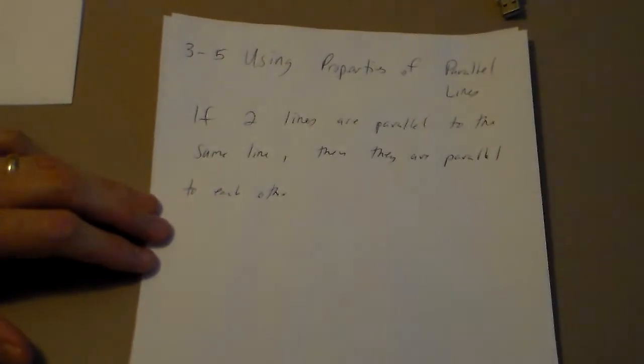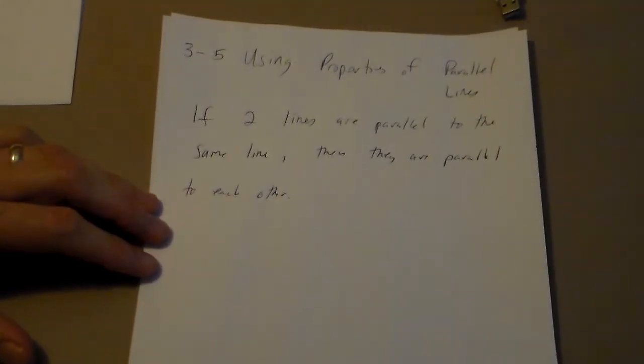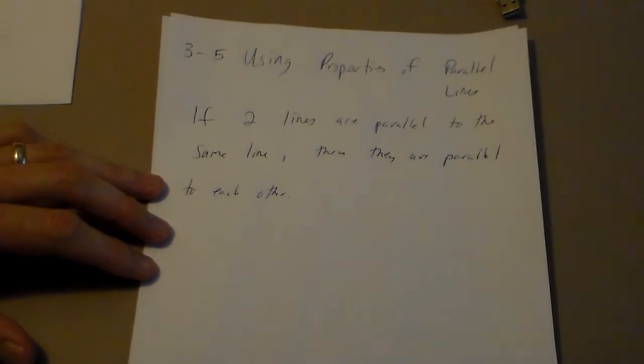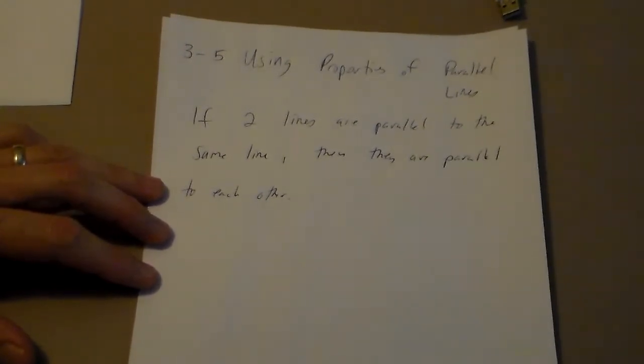Now, this is kind of like a common sense type of thing. If two lines are parallel to the same line, then they are parallel to each other. It's kind of like the transitive property, but don't put transitive for this because I'm going to mark it wrong.